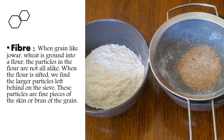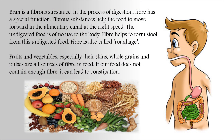Fibers: when grains like jowar and wheat are ground into flour, the particles in the flour are not all alike. When the flour is sifted, we find large particles left behind on the sieve. These particles are fine pieces of the skin or bran of the grain. Bran is a fibrous substance. Fibrous substances help the food to move forward in the alimentary canal at the right speed. Fibers helps to form stool from undigested food, and fiber is also called roughage. Fruits and vegetables — especially their skins — whole grains and pulses are all sources of fiber. If our body does not contain enough fiber, it can lead to constipation.